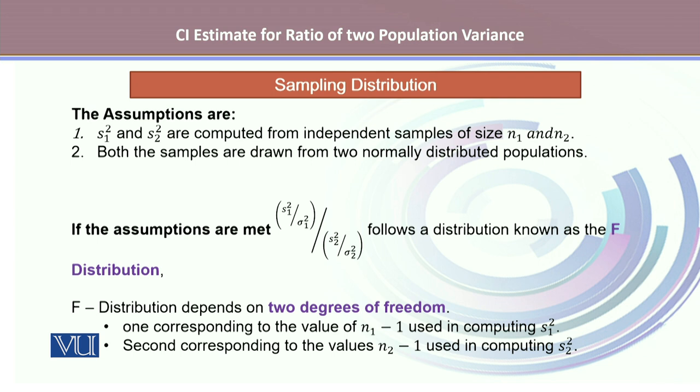Since the assumptions talk about the two sample variances coming from independent samples and both samples coming from the normal probability distribution, and if these assumptions are met, the ratio of these variances follows a distribution known as the F distribution, where F distribution depends on two degrees of freedom.